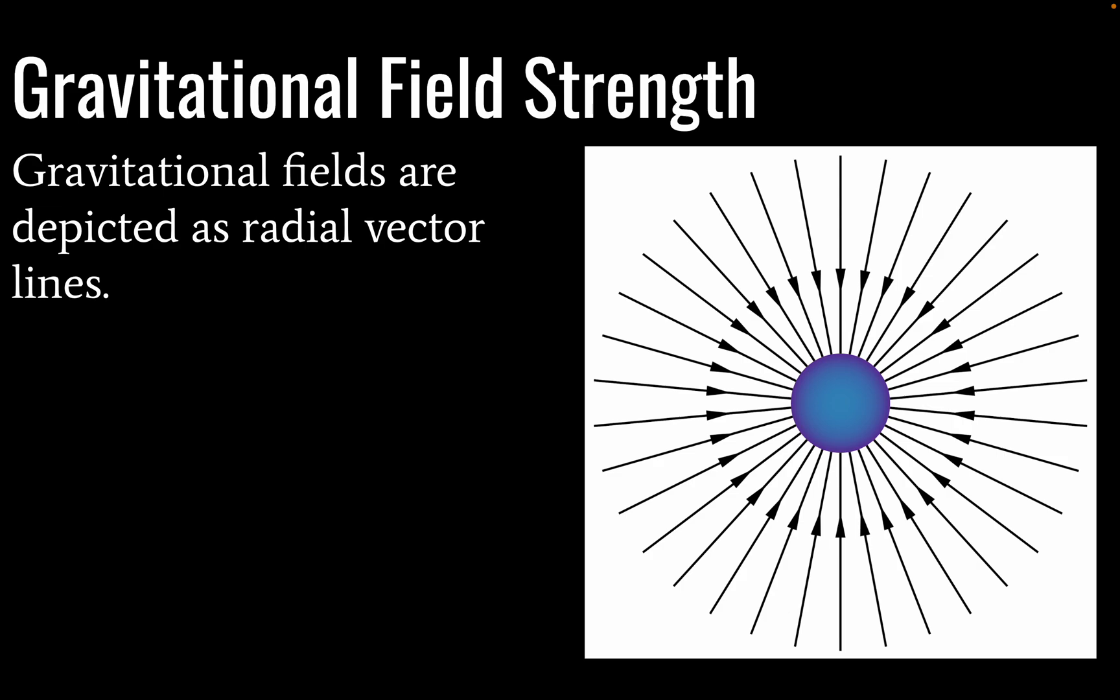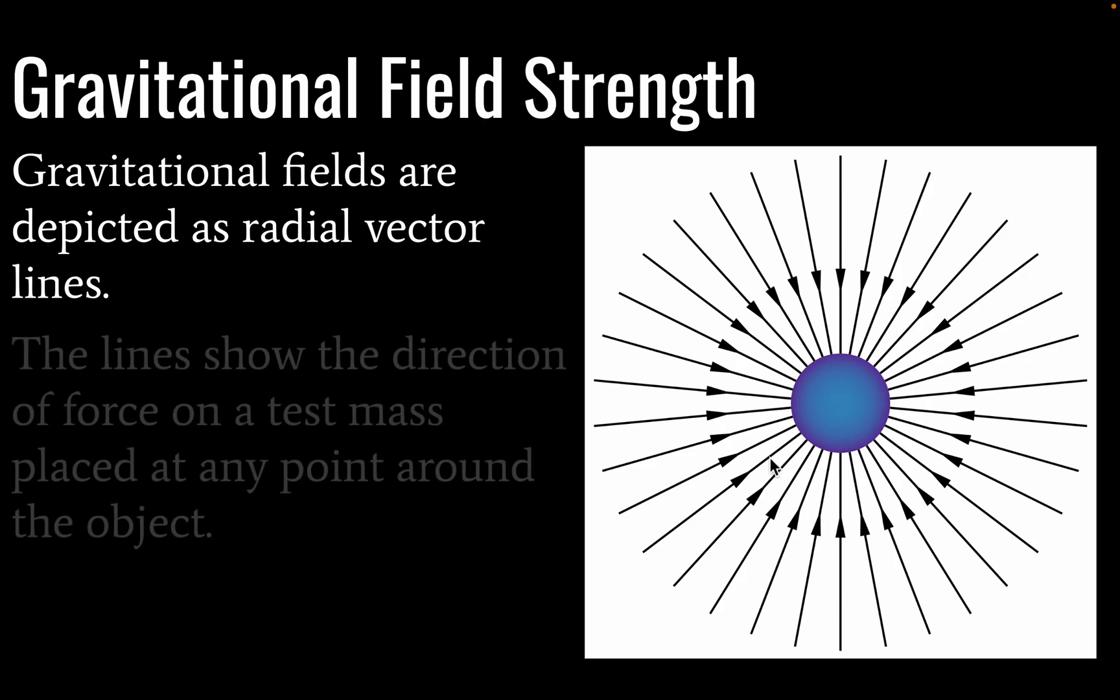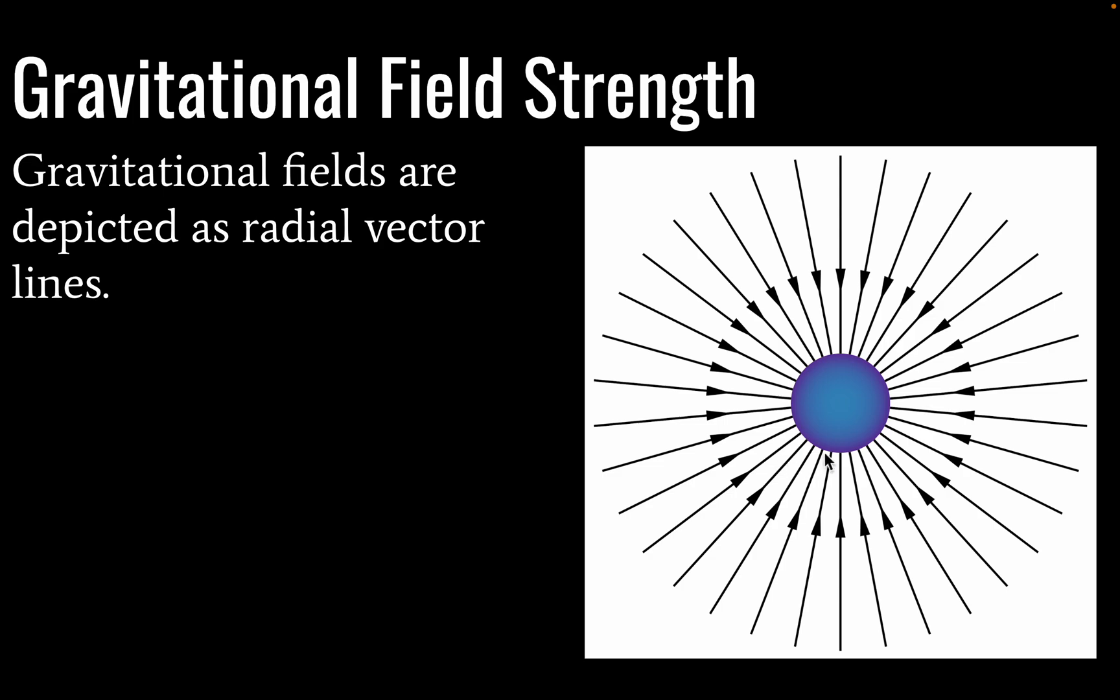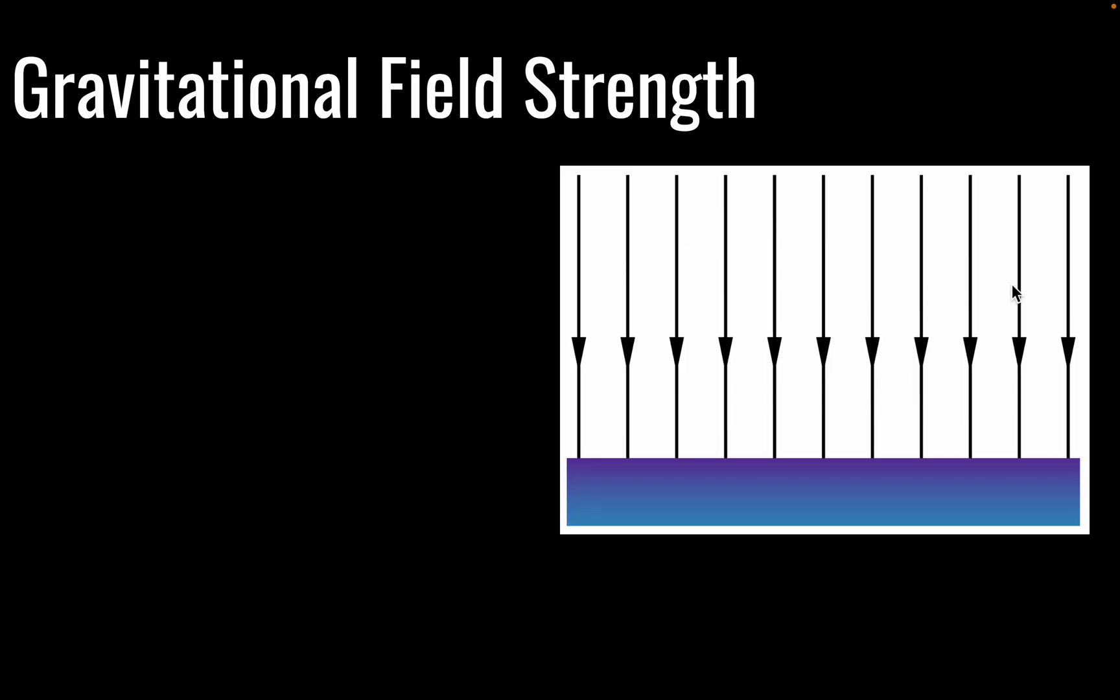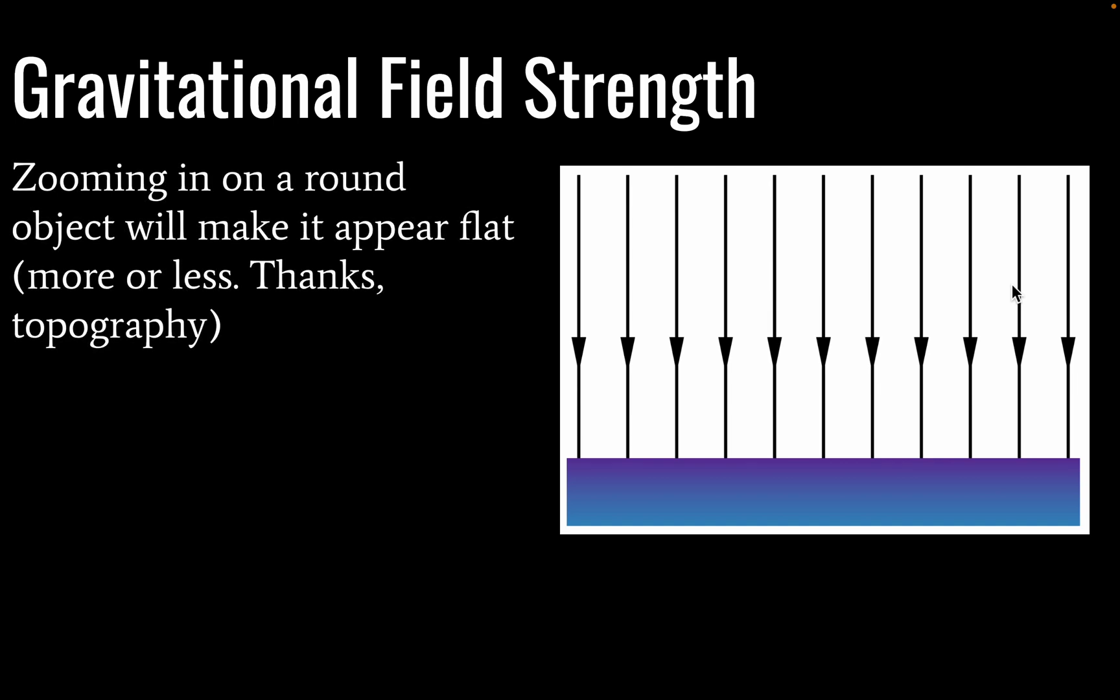So our gravitational fields are depicted as radial vector lines, assuming that our body is spherical, and that is usually the case. We'd be looking at a large body, typically a planet or moon or possibly a star. The lines show the direction and force on a test mass placed at any point around the object. If I put a test mass here, for example, it's going to be accelerated along the arrow of my field line.